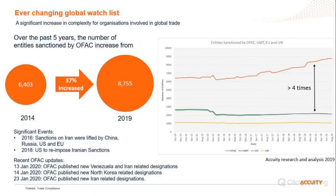The ever-changing global watchlist is something crucial for each organization. From available data, you can see how the OFAC, UN, EU and HM Treasury lists changed over the last five years. OFAC has more than four times more entities compared to the rest, with an increment of 37% from 2014 to 2019. Changes in the OFAC watchlist are triggered by events such as the lift of Iran sanctions in 2016 and the re-imposition of Iran sanctions in 2018. Going into 2020, this list will continue to change — in January alone there were already new designations added by OFAC.